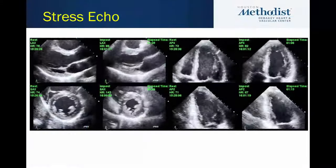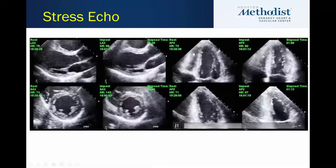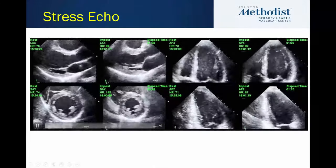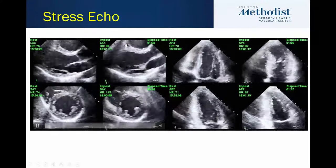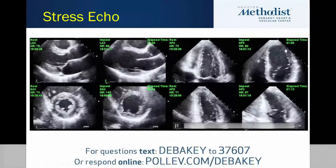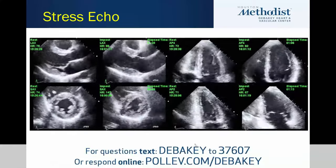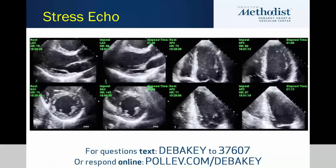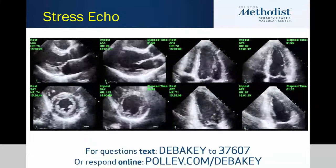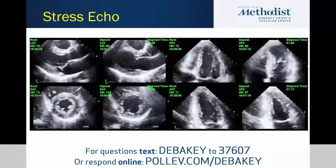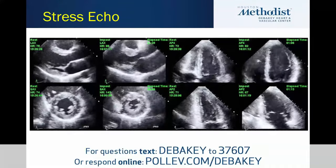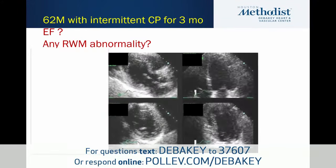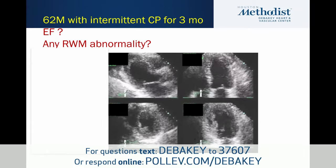This is a normal treadmill exercise stress echo. The resting views are on the left and the immediately post-exercise views on the right. In all post views you can see more vigorous contraction, a smaller end-systolic cavity, and improvement in ejection fraction — typically we define a 5% or higher improvement in EF as normal.